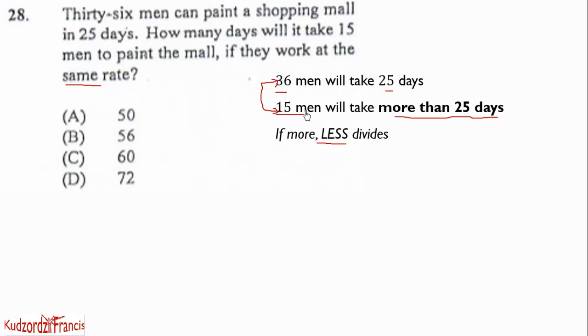15 is less. So you divide the product of 36 by 25 by 15. And that will give you something like this. 36 times 25 over 15. So that will be equal to 60. Therefore, it will take 15 men 60 days. You can see that 15 men will take more than 25 days to do their work. So the correct answer will be C.